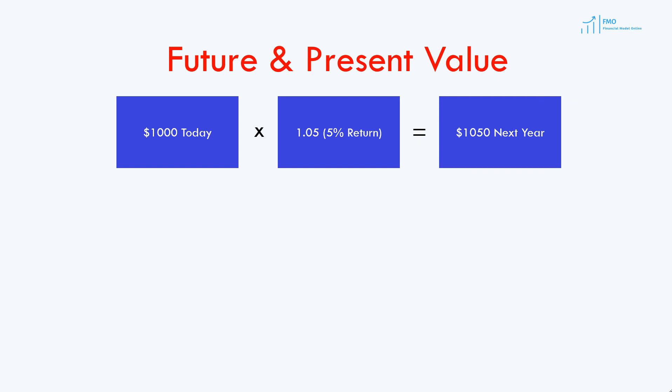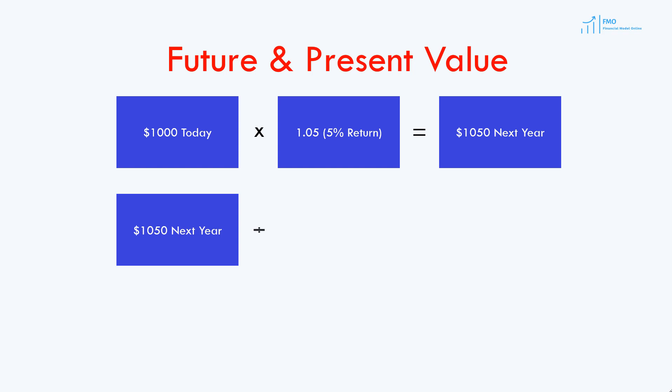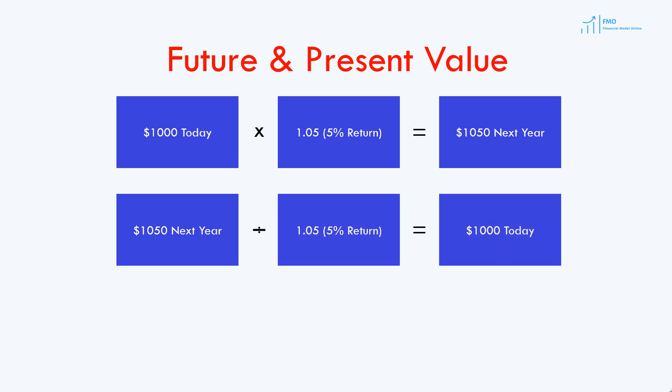Let's now reverse the problem and ask ourselves: what is the value of $1,050 today? Remember, 1,050 will be received one year from now at a 5% interest rate. The value of 1,050 today is 1,050 divided by 1.05, which is 1,000. This concept of bringing future value to present value is called discounting. The interest rate used is called the discount rate in the context of valuation.